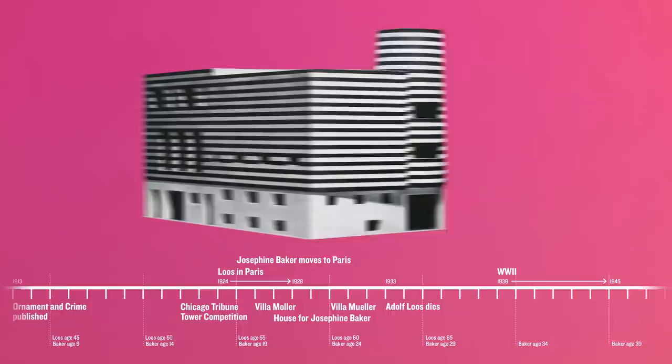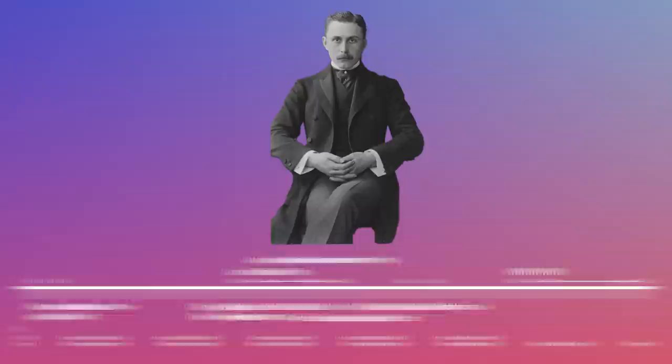The Josephine Baker House was designed for the African-American dancer and superstar entertainer Josephine Baker on a site in Paris in 1927 by the architect Adolf Loos.